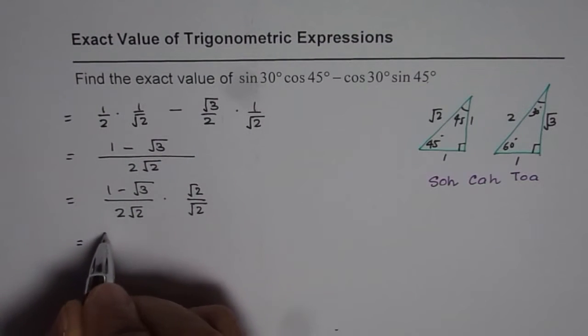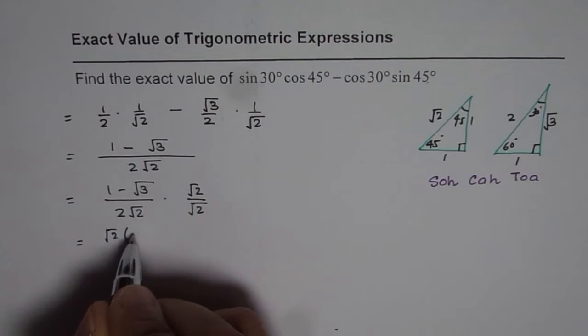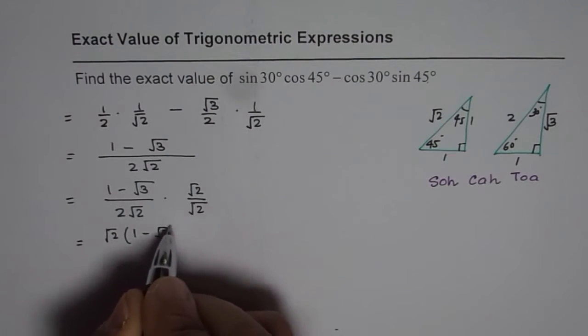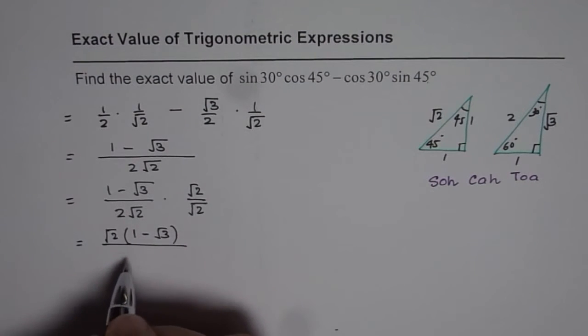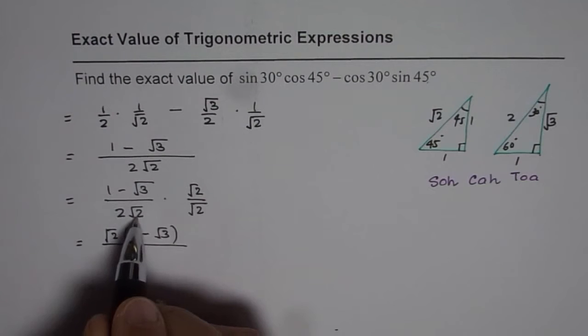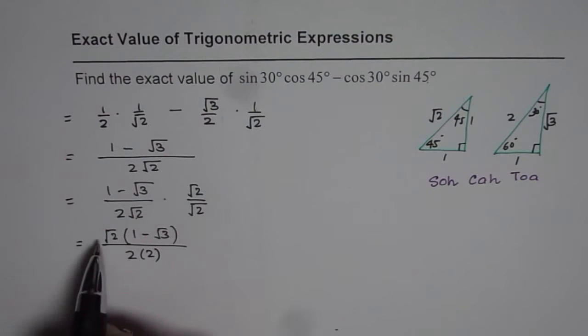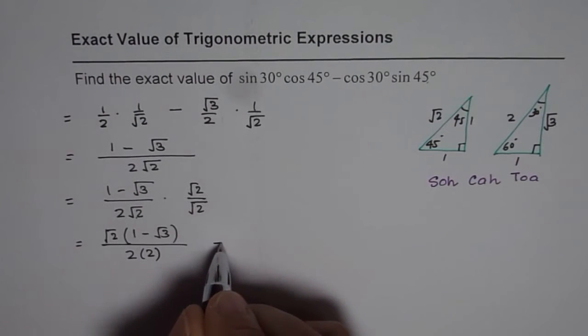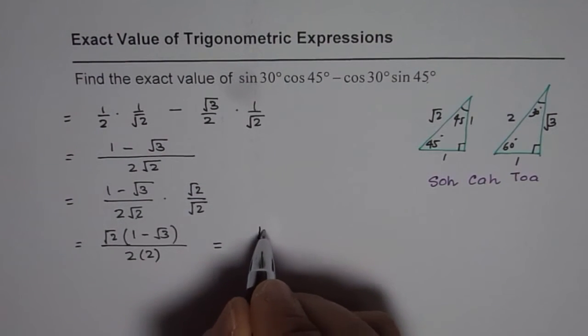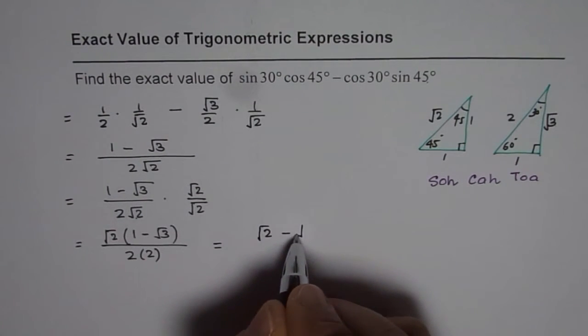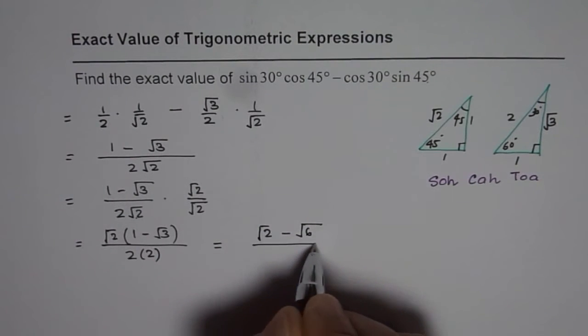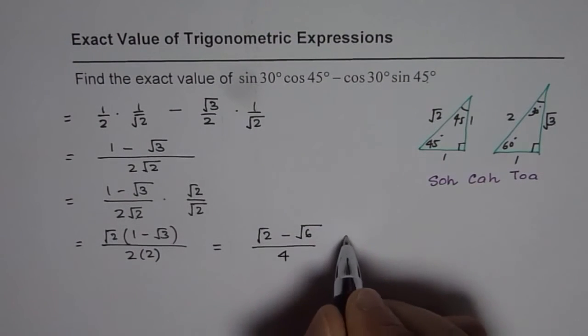If I do that, I get square root 2 times 1 minus square root 3. In the denominator, we get 2 times, and square root 2 times square root 2 is 2. Now we can distribute the numerator. We get square root 2 minus square root 6 divided by 4. And that is our answer.